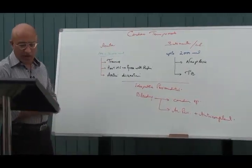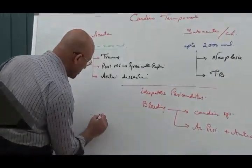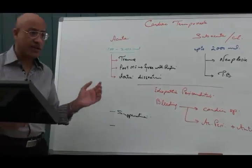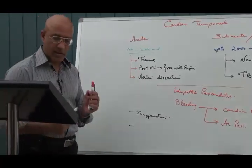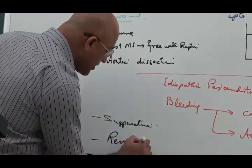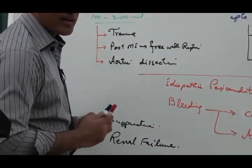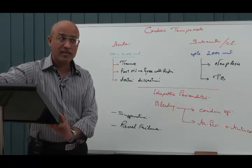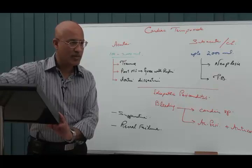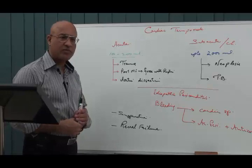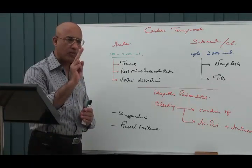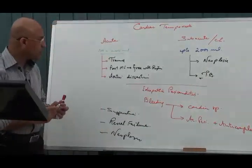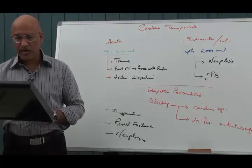Suppurative pericarditis can also lead to tamponade if the pericardial effusion is not drained. Renal failure causes uremic pericarditis, which can also end up as tamponade. Uremic pericarditis may be painful or painless. Neoplasia and tuberculosis are also causes of painless pericarditis that can progress to tamponade.